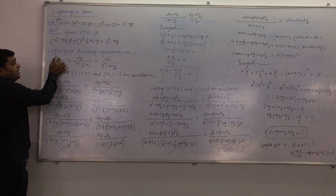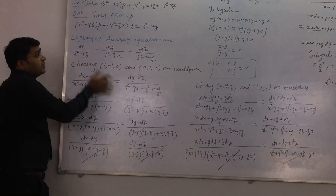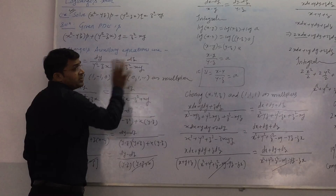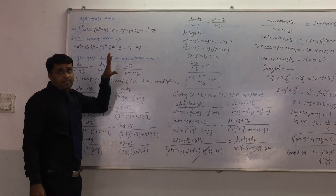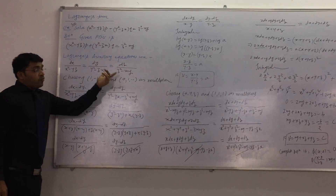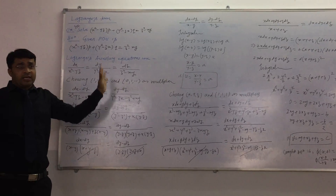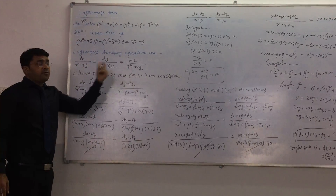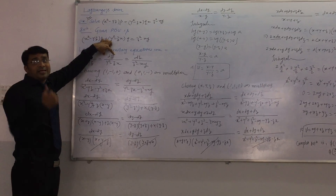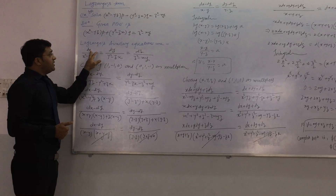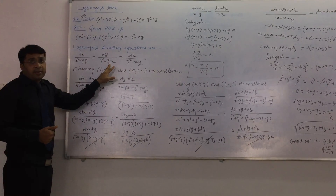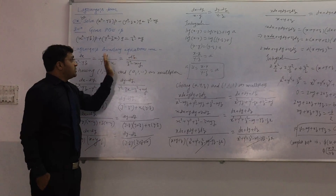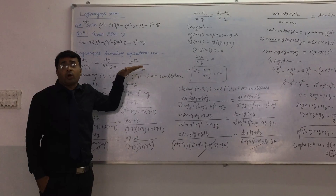The Lagrange's auxiliary equation is written as dx upon the coefficient of p, which is x squared minus yz, then dy upon the coefficient of q, which is y squared minus zx, equals dz upon the right-hand side, z squared minus xy. We observe whether this can be solved by the grouping method. However, grouping any two ratios is not possible because z appears in the denominator and doesn't cancel, so this question cannot be solved by grouping.